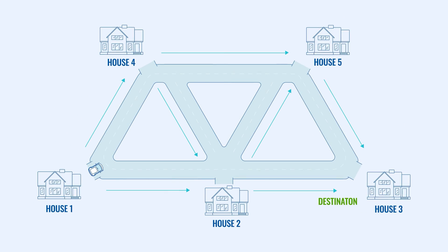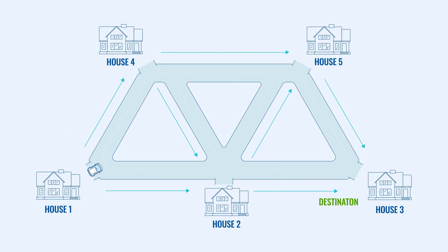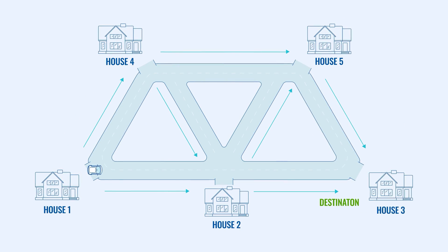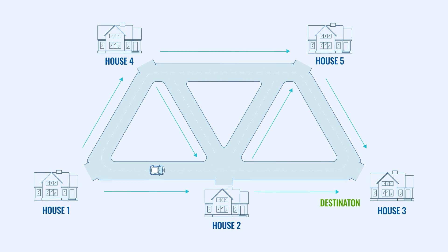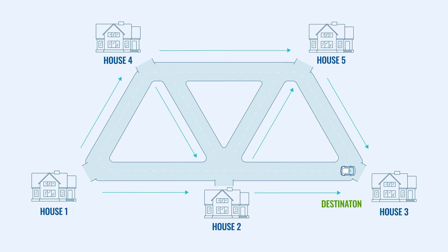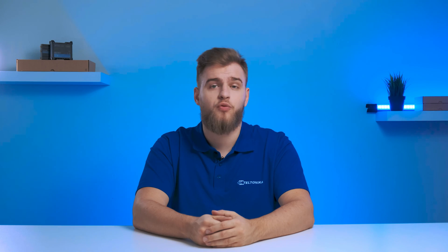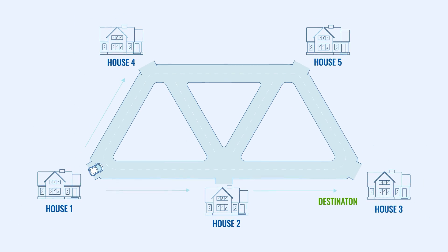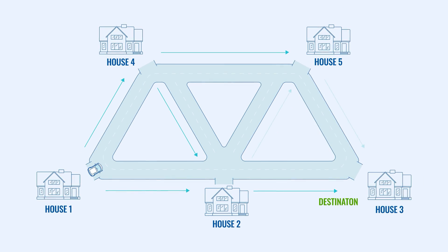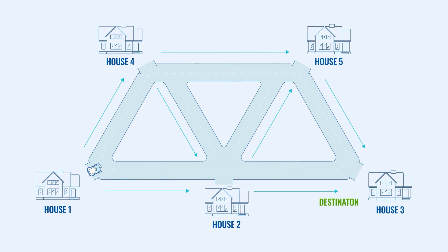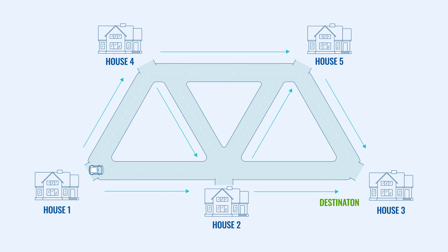Static and dynamic routing are kind of similar to driving. With static routing, you know the single shortest, least crowded way to your friend's house — but if one part of that road suddenly closes, you get stuck. Dynamic routing is like driving to your friend's house with multiple possible roads in mind.